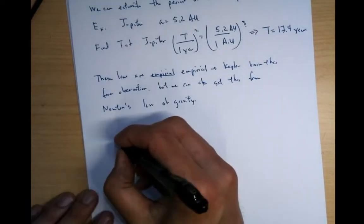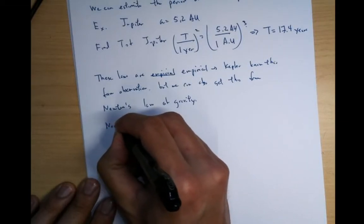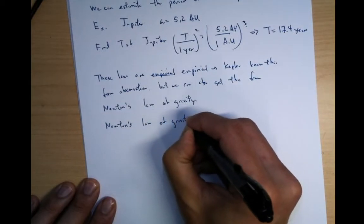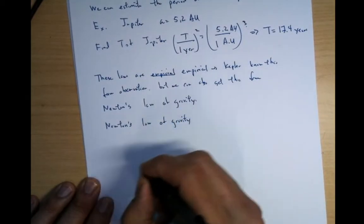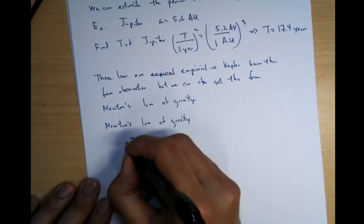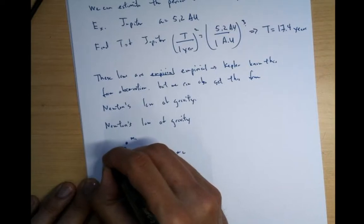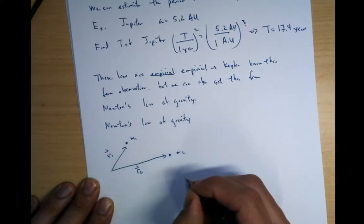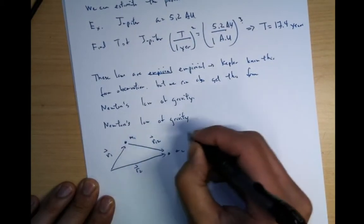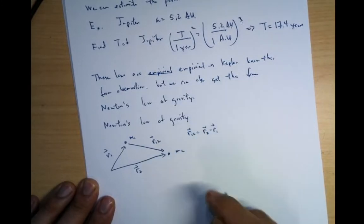So let's write down Newton's law of gravity. So suppose you have basically two masses. This is m1, m2. There's some distance away from each other. This is r1 vector, r2 vector. And there's a distance between these two, which is r1,2. r1,2 is equal to r2 minus r1.